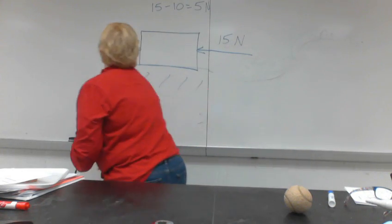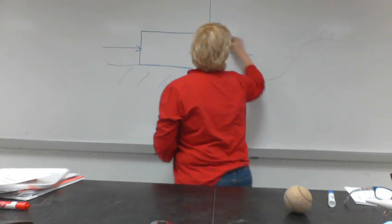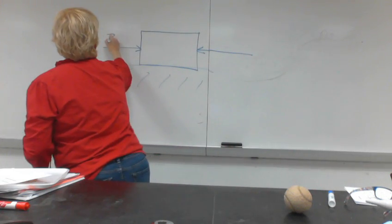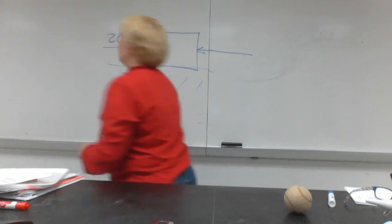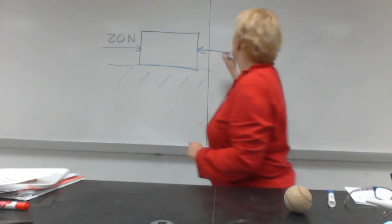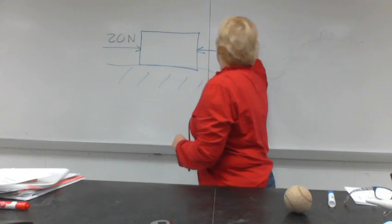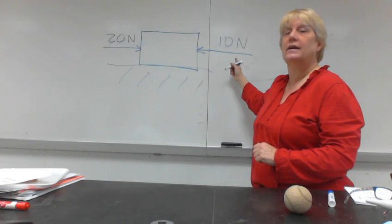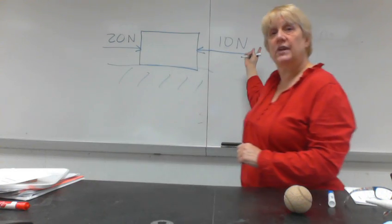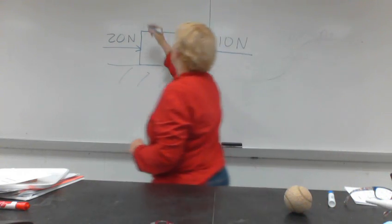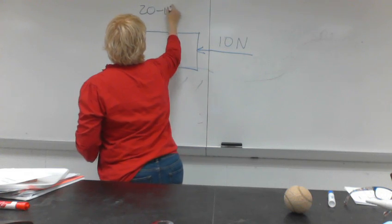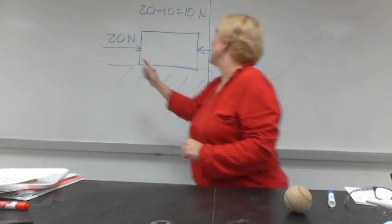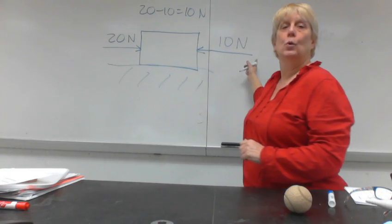But let's imagine that we had a different situation. Let's imagine that you're pushing from this direction with 20 newtons, but you're only pushing from this direction with 10 newtons. Now obviously 20 is bigger than 10, so the box is going to move this way. What is the net force? 20 minus 10 is 10 newtons, and the direction of the net force will be this way.